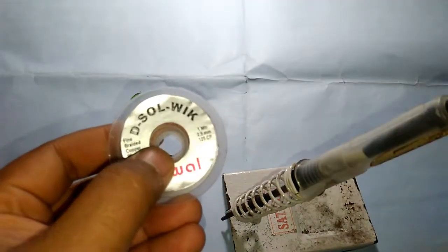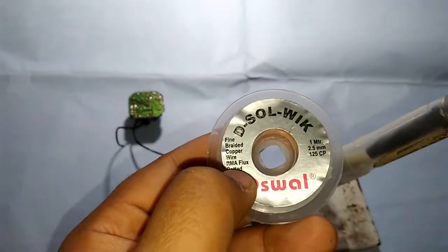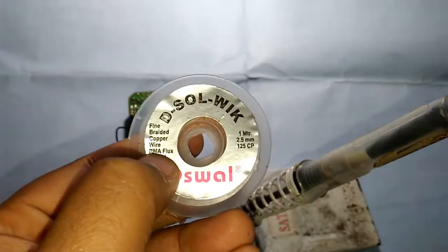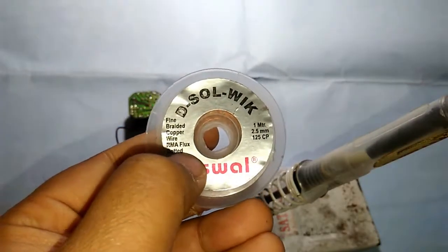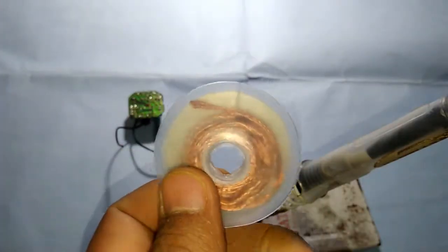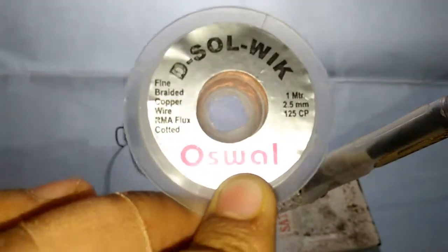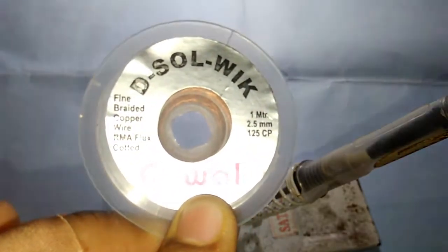For this you need a soldering iron, a desolder wick. This desolder wick has RMA flux in it. If you don't have flux, you have to use flux along with it so that it will be easier to desolder. But most of the wicks come with flux coating so you don't need to worry about it.